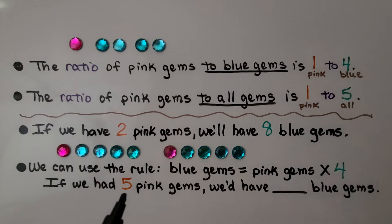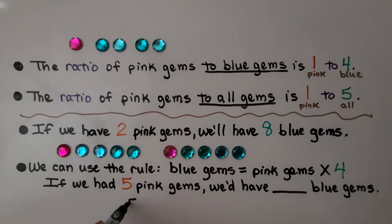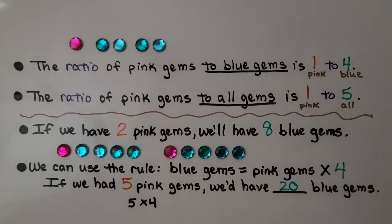So if we had five pink gems, how many blue gems would we have? Blue gems equals pink times four. If we have five pink, that would be five times four, which means we'd have 20 blue gems. For each pink gem, we have four blue ones, so we can just do the number of pink times four to find the blue.